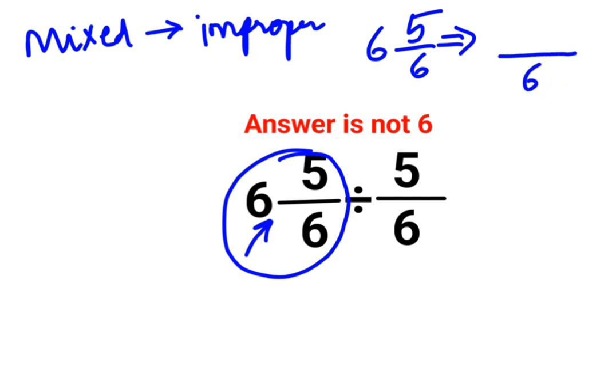If you want to convert it into its improper form, the denominator will still continue to remain 6. But in the numerator, this 6 and the integer part gets multiplied. So, 6 multiplied by 6 plus the numerator which is 5. So, this is actually coming out to be 41/6 divided by 5/6.